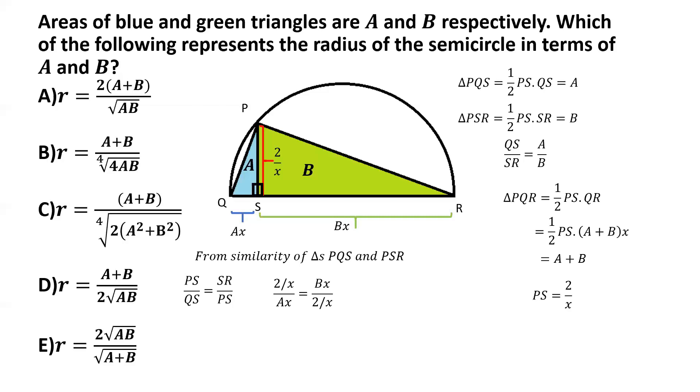And we basically obtain this equation from which we can solve for X in terms of A and B. So if we simplify both sides, we get 2 by AX squared is equal to BX squared by 2, from which we get ABX to the power 4 equal to 4, and from which we can obtain X is equal to the fourth root of 4 by AB.